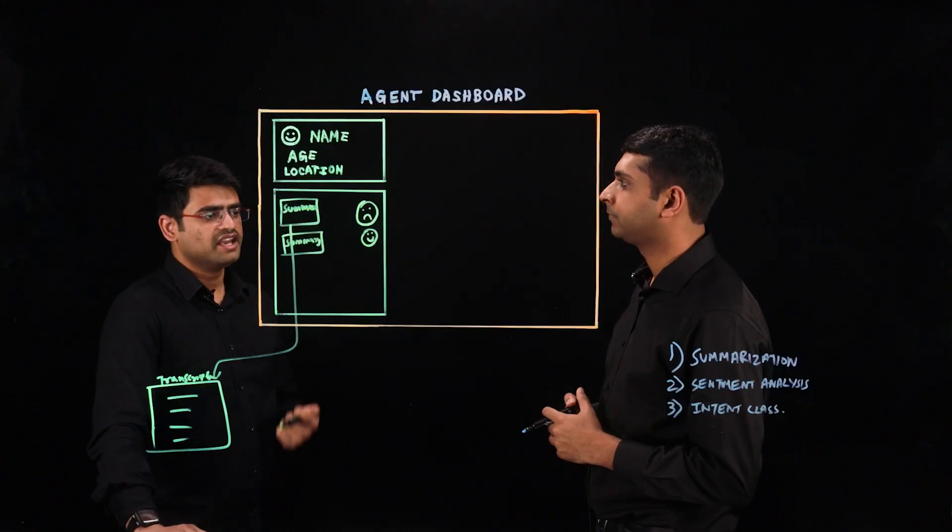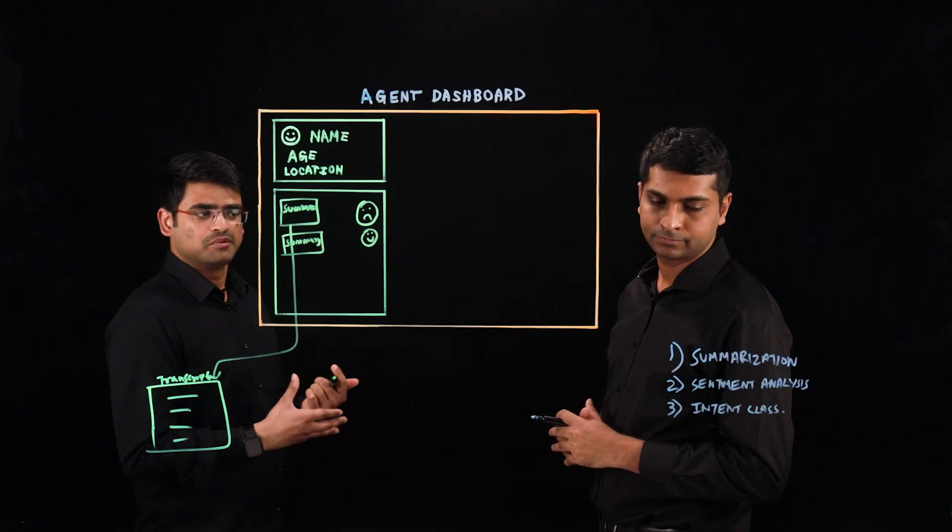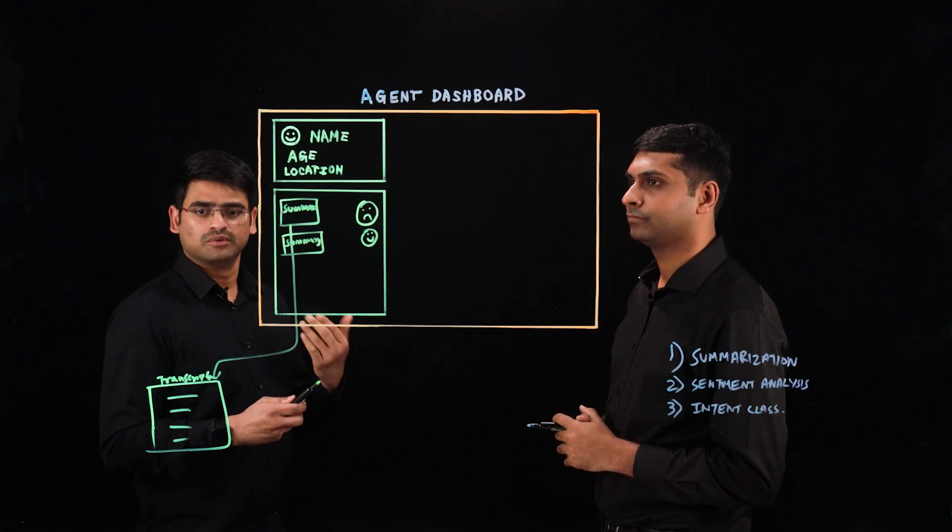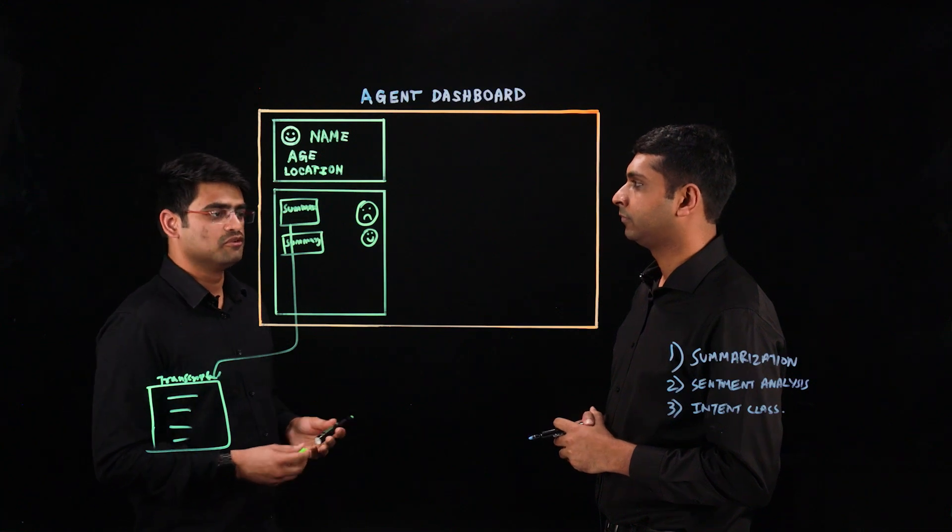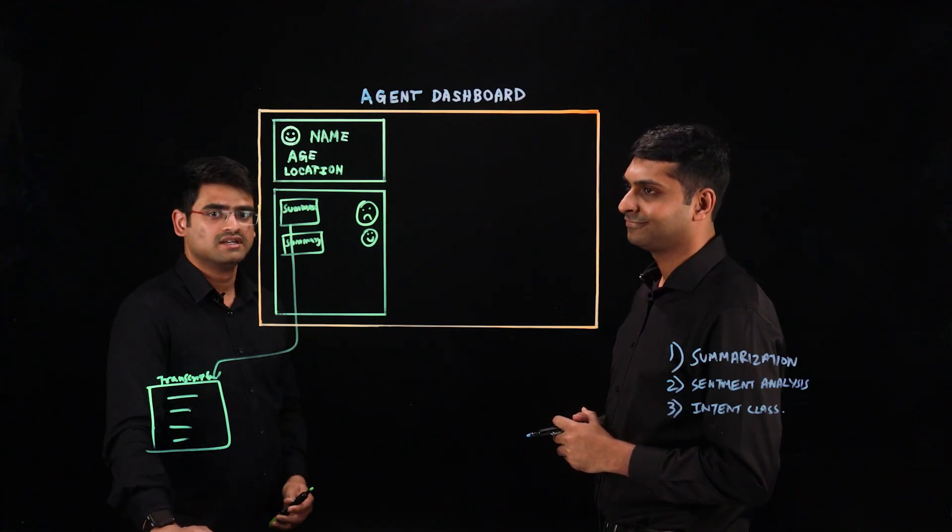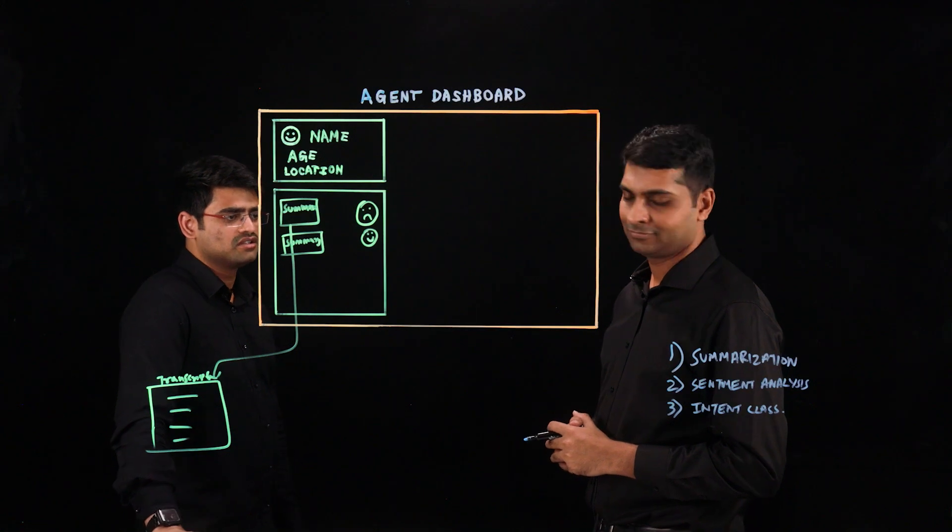Okay, so the agent already knows in advance what kind of experience the customer had in the previous instances, whether it was negative or positive experience. That is good information to have before the agent picks up the call and talks to the customer. But can you explain a little more about how intent classification can be utilized here?